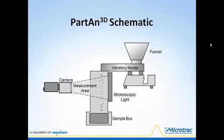Here's a schematic showing the simplicity of the Partan 3D's dynamic image analysis method. The dry sample placed in the funnel above moves on the vibratory feeder to the edge of the sensing zone, where it falls by gravity through the sensing zone and is collected in the sample box at the bottom. A light strobe on one side lights the particles as a digital camera on the other side photographs them as they tumble through. A video file is stored and distributions and summary data for 32 morphological parameters are calculated and reported, typically in one to two minutes.